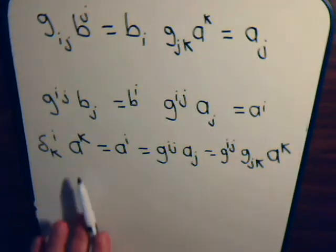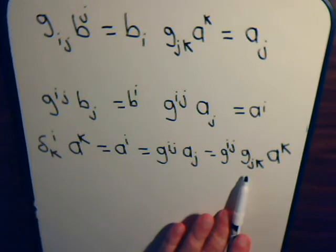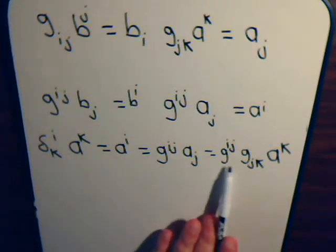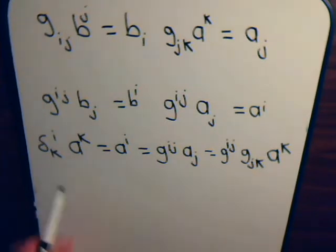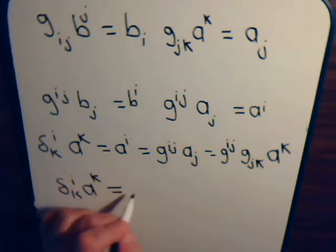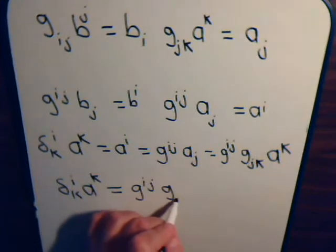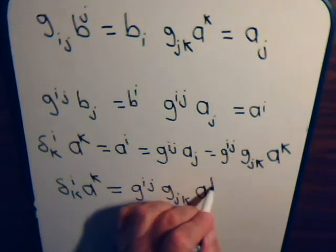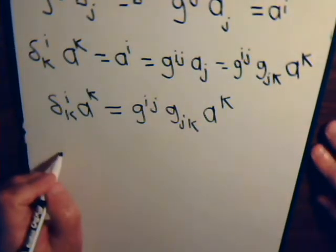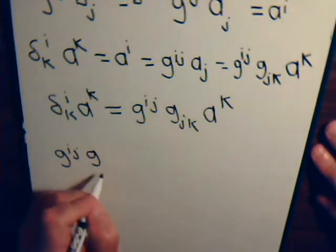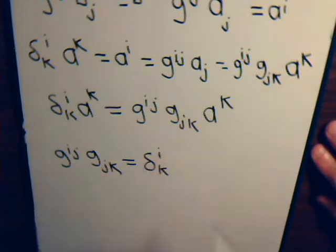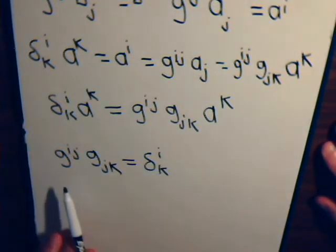So what does this give us? We start with this and we end up with this over here, so what this tells us is that δ_K^I equals G^IJ G_JK. This clearly implies then that δ_K^I equals G^IJ G_JK.